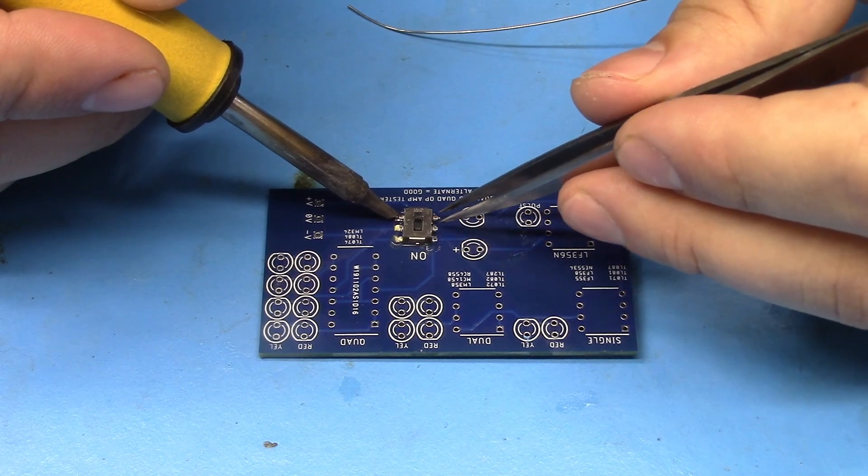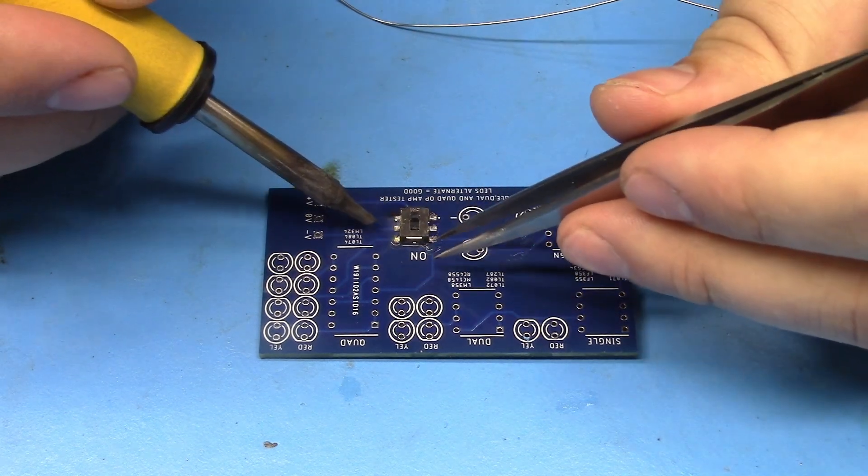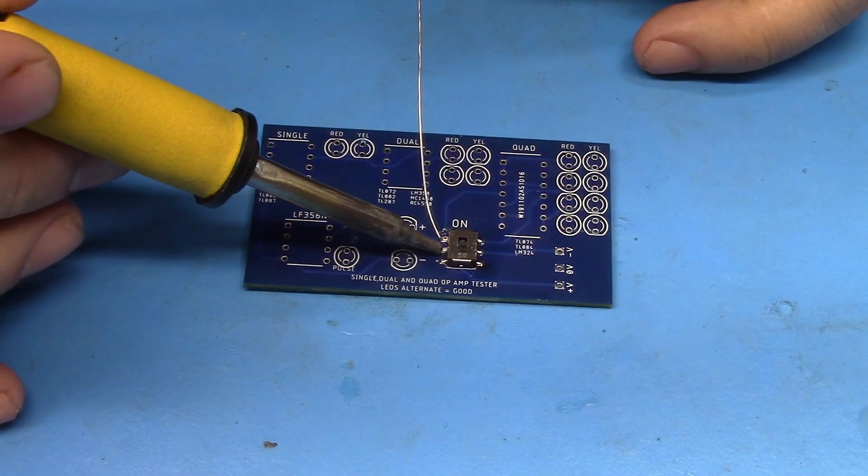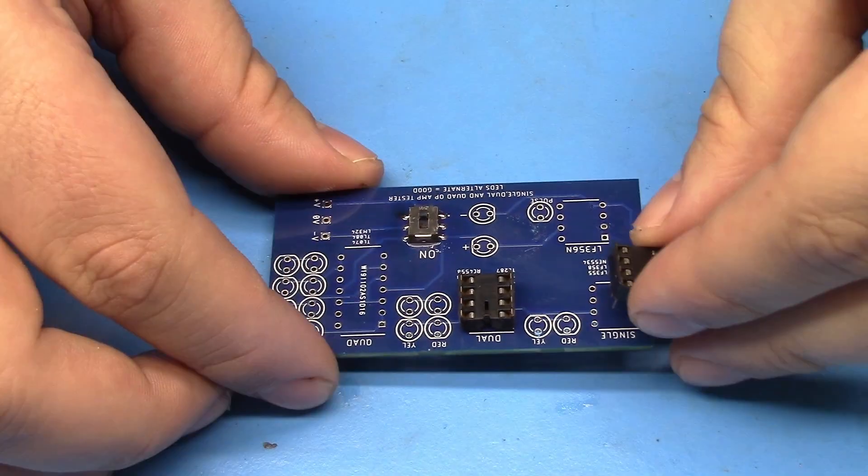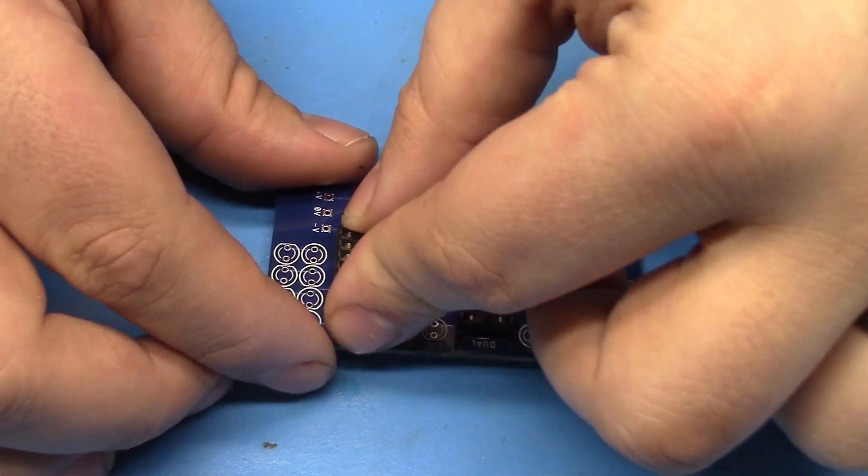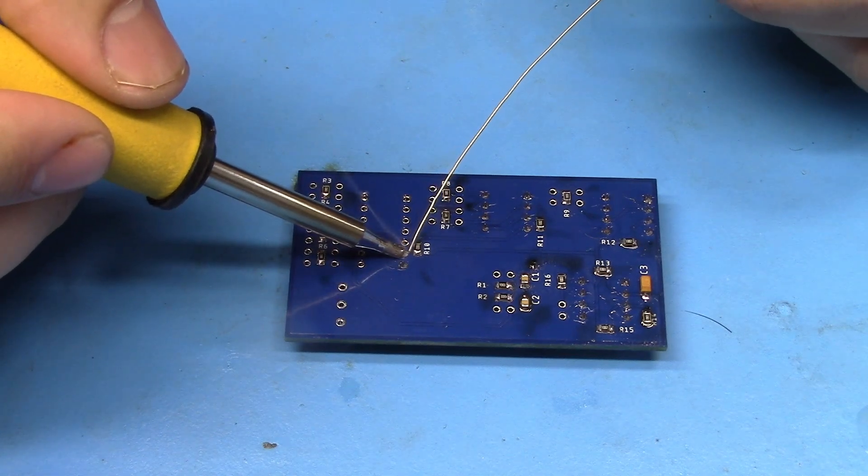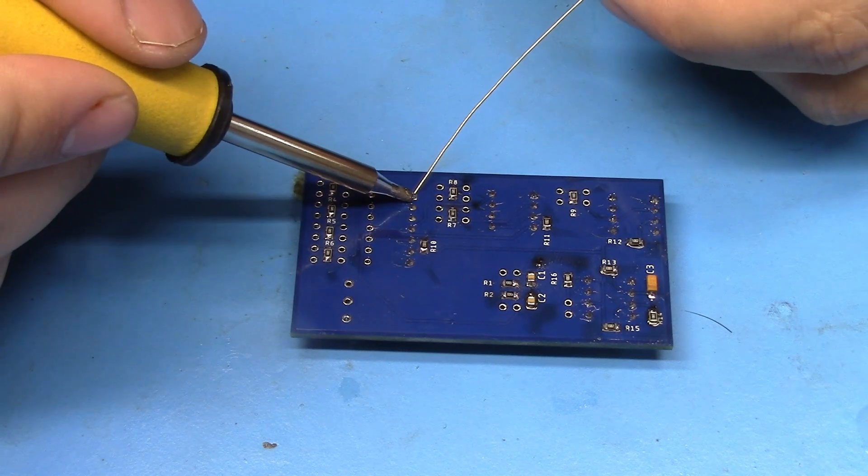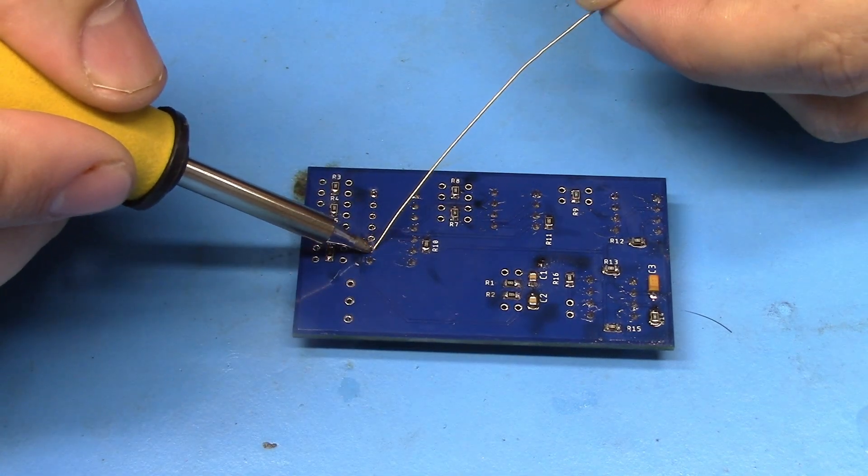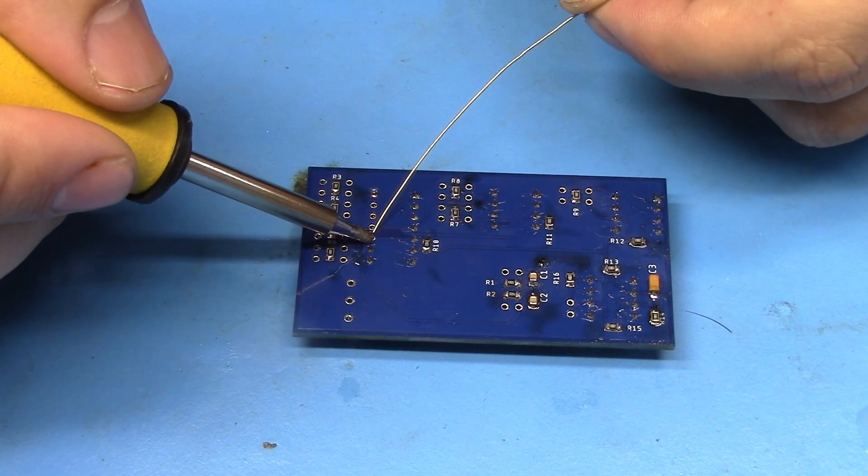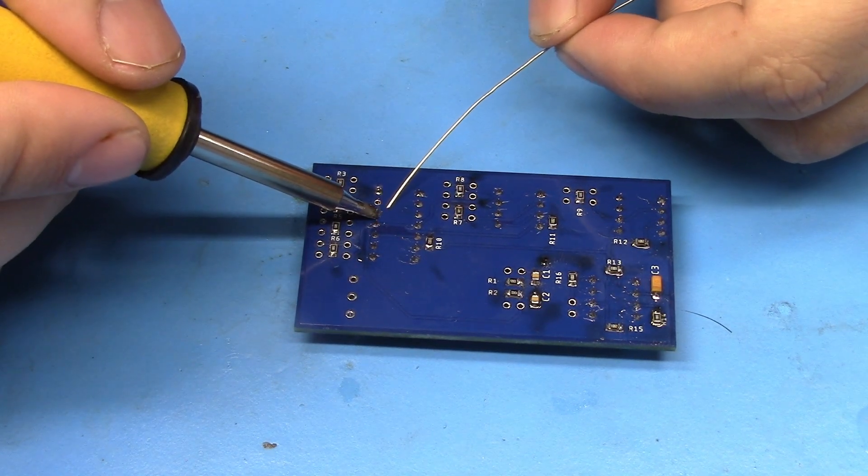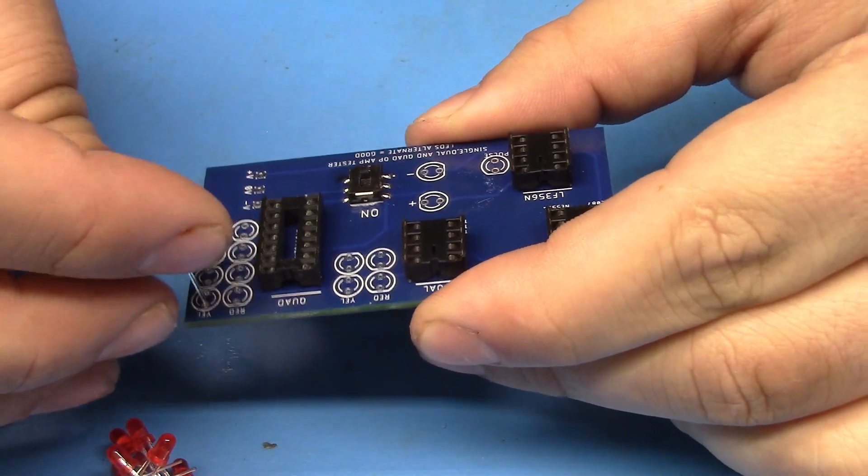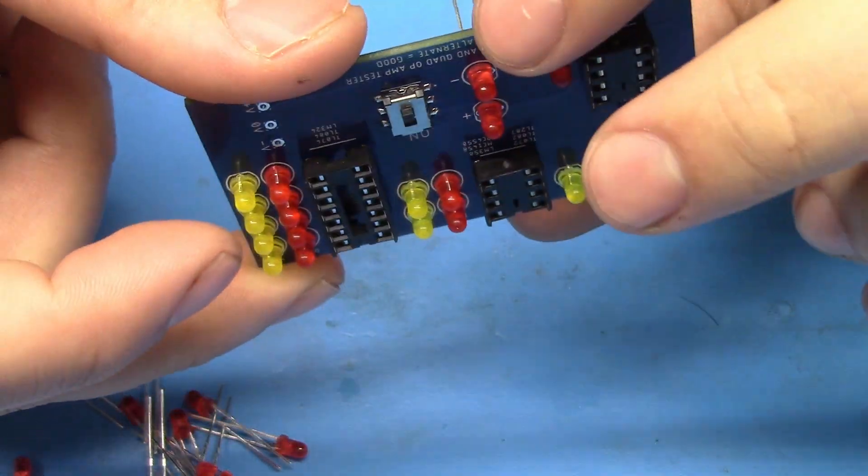Now we can solder the double pole double throw switch into place. This is responsible for turning on and off the negative and positive supply. Next we can solder in all the IC sockets. The final components that need to be soldered are a lot of 3mm LEDs.